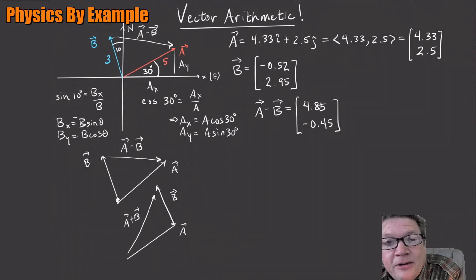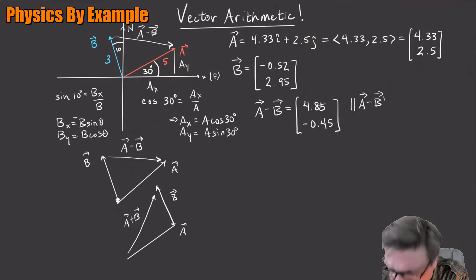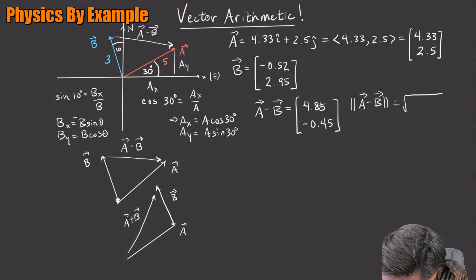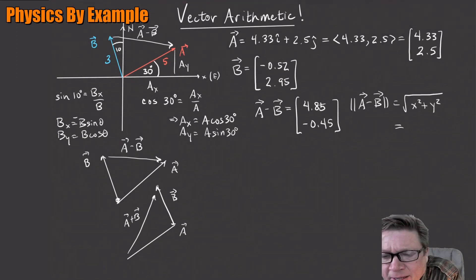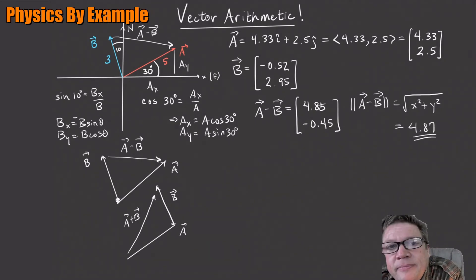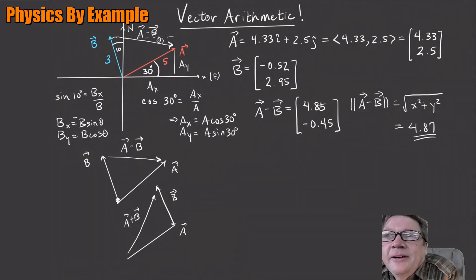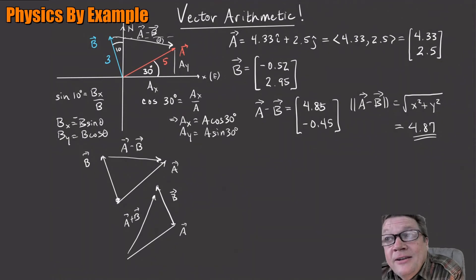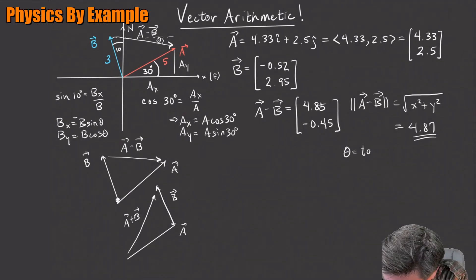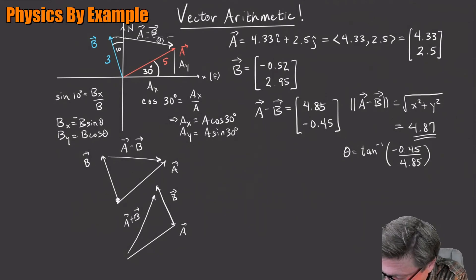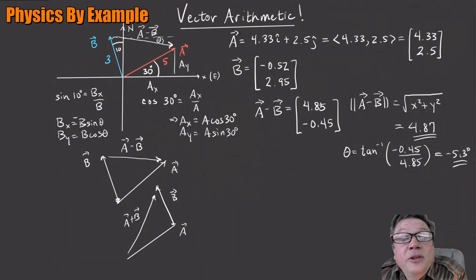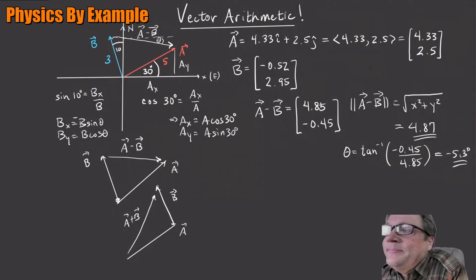I want the length — what I was after is how far apart are Alice and Bob. The magnitude of A minus B is the square root of X squared plus Y squared, and if you do this you get 4.87. And if I want to know the angle — if you're going to go from one person to the other — the little angle is the inverse tangent of Y over X: minus 0.45 over 4.85. If you do that, I got minus 5.3 degrees. So they're 4.87 kilometers apart, and to get there you go about 5.3 degrees south of east. That's a pretty tiny angle, which makes sense from the diagram.